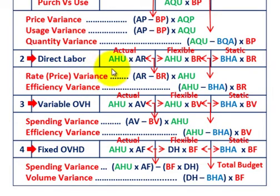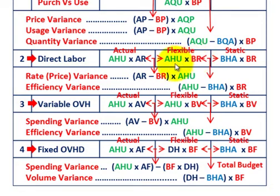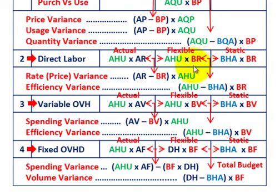For our rate or price variance, we're comparing our actual with our flexible budget. The common factor between actual and flexible amount is actual hours used, so we factor that out and look at the difference between our actual rate and the budgeted rate. That difference times the actual hours used is our rate or price variance. For our efficiency variance, comparing flexible versus static budgets, the common factor is the budgeted rate. We factor that out and look at actual hours used minus budgeted hours allowed times the budgeted rate — that's the efficiency variance.